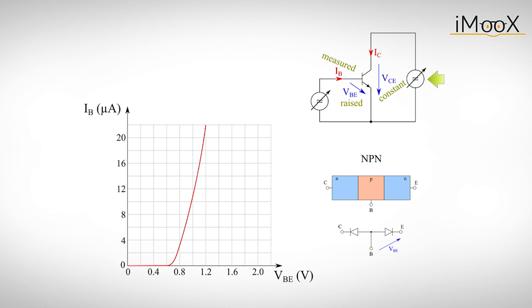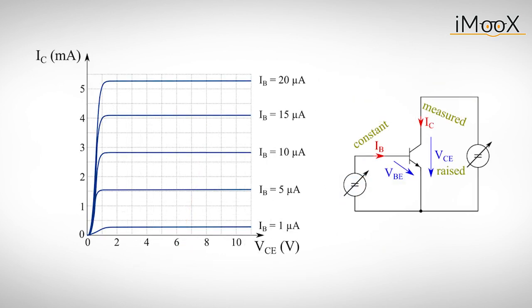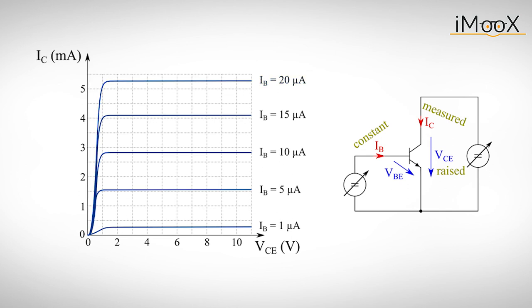If we do the measurement again for different positive values of VCE, we will see not much difference in the behavior. If we also measure the collector current IC for different values of the collector emitter voltage VCE, we can determine another function called the output characteristic of the transistor. The diagram only shows the characteristic of five different base currents. But in reality, there are infinitely many values for IB, which would result in infinitely many curves, which again would not make much sense to draw into one diagram.